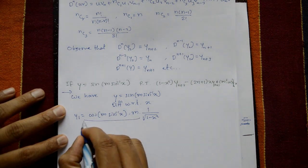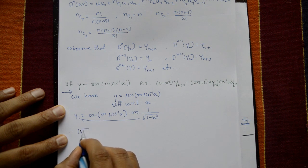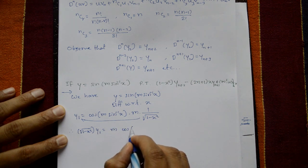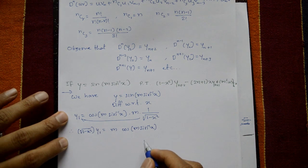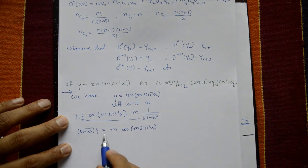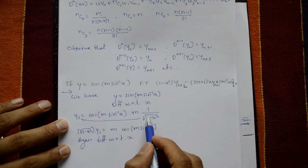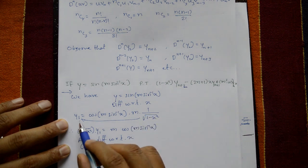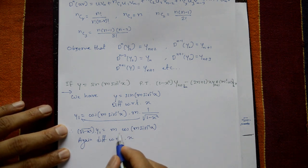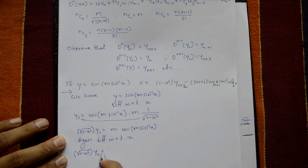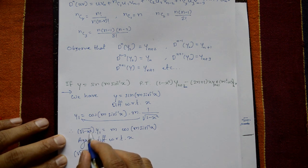Shifting the denominator to the left-hand side: square root of (1 - x²) times y1 equals m·cos(m·sin⁻¹x). Now differentiating again with respect to x, we use the product rule rather than the quotient rule. Applying the product rule to square root of (1 - x²) times y1, we get: square root of (1 - x²)·y2 plus y1 times the derivative of square root of (1 - x²).